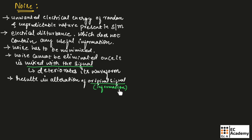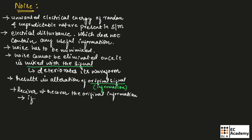Hence, wrong information will be received at the receiver. The function of the receiver is to receive the information transmitted by the transmitter and recover the original information. If noise is high in the received signal, the receiver will recover noise instead of information.